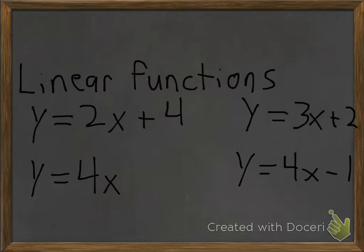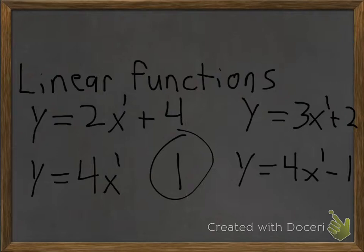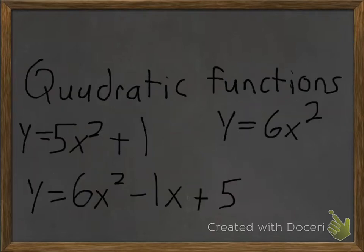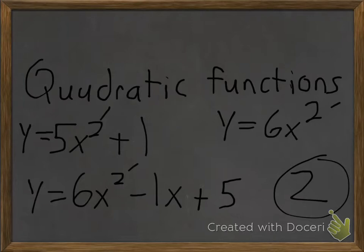Now we're going to learn how to name certain types of polynomial functions. You name polynomial functions based off their degree. To call it a linear function, its degree has to be 1 — as you can see, the highest exponent in all these equations is 1, so they're all linear functions. In a quadratic function, your degree is 2 — as you can see in all these equations, your highest exponent is 2, so they're all quadratic functions.